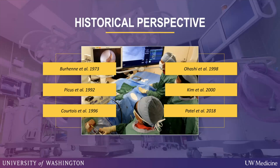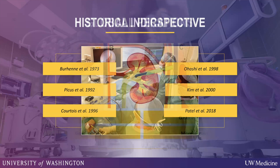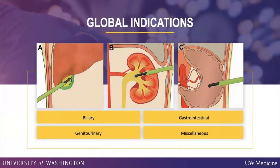If you look at the literature, endoscopic procedures in IR are not particularly new. They were described in 1973 and continue up till today with almost 50 publications in the past five years, many of them by interventional radiology colleagues in IR journals. When you use endoscopy in IR, you can use it for a variety of indications: the biliary tree, the gastrointestinal system, the genitourinary system, and a whole variety of other uses as well.